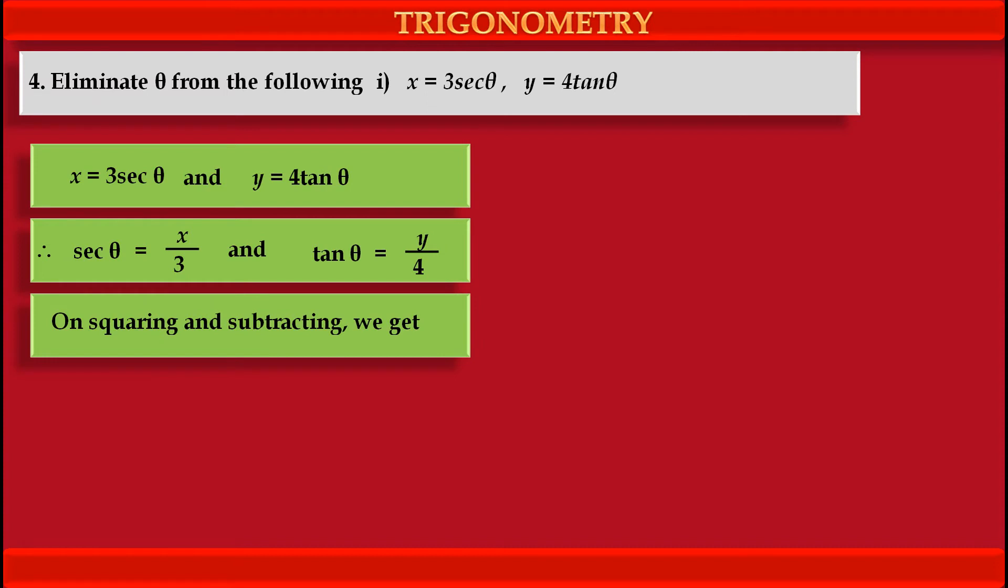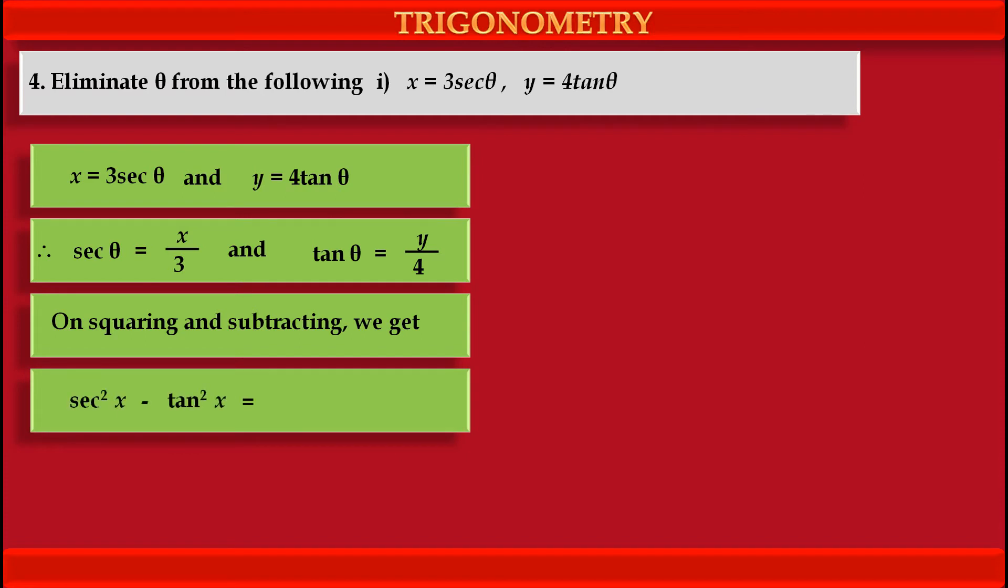On squaring these two functions and subtracting them we get sec squared theta minus tan squared theta. In the first term, value of sec squared theta, that is x upon 3 whole squared, minus the second term, value of tan squared theta, that is y upon 4 whole squared.